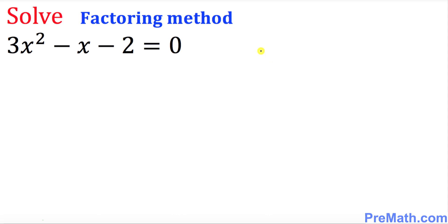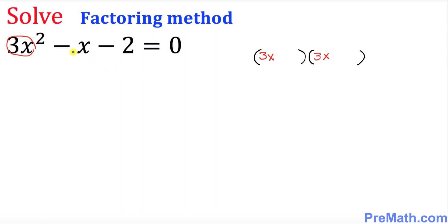Let's go ahead and get started with the factoring process. I want you to put two parentheses right up here. First, I want you to put down 3x right up here and 3x right up here. There's no coefficient in front of x, so by default if there's no coefficient you just put 1 over there.